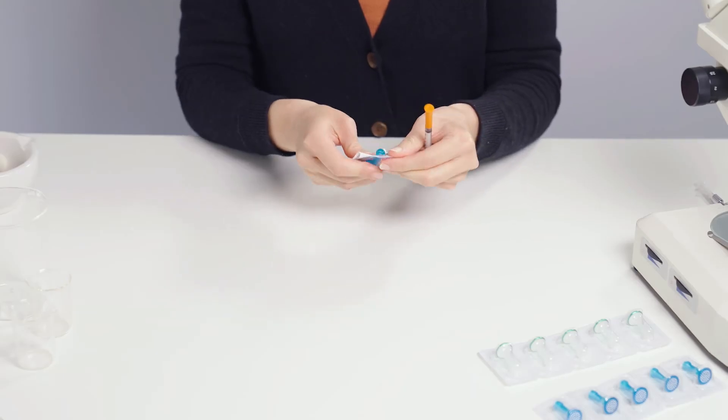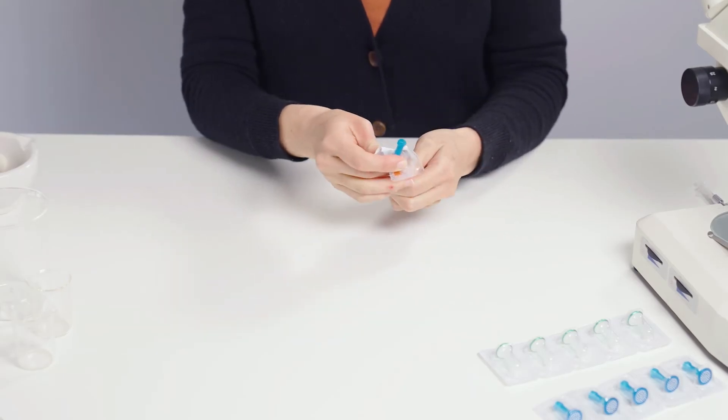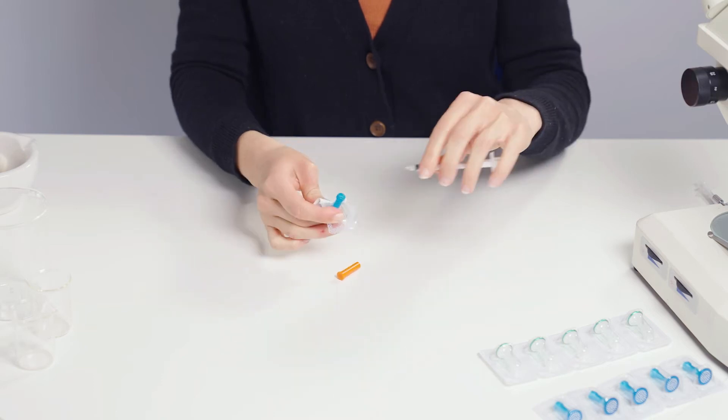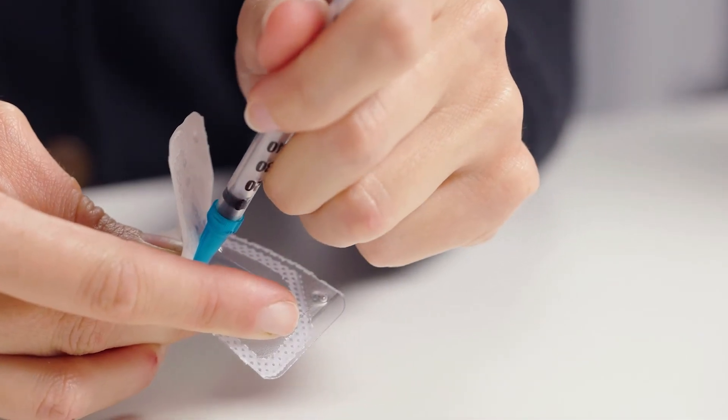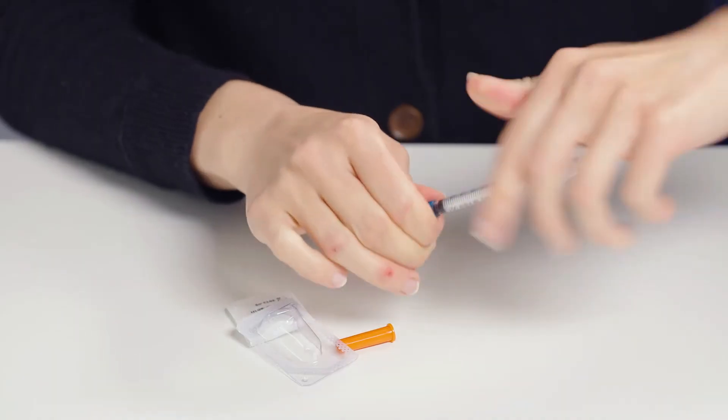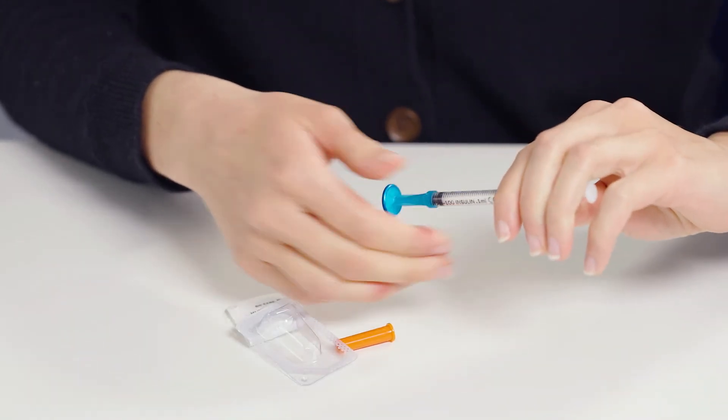Here is the same process with a BD syringe with fixed needle. Open the SteriFilt wrapping and tilt the filter upwards, again being careful not to directly touch the filter. Insert the syringe. Seal securely by screwing the syringe firmly in place.